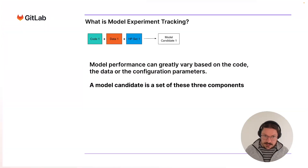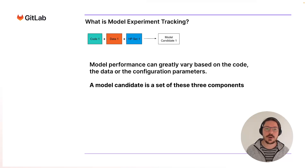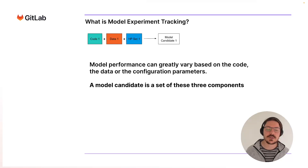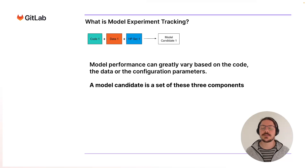So what is model experiment tracking in the first place? When we are training a machine learning model, a machine learning model is a combination of three components: the code that you run to train the model, the data that the model is trained upon, and a set of configuration parameters that we call hyperparameters. Each one of these components, if we change, will change the performance of the model.